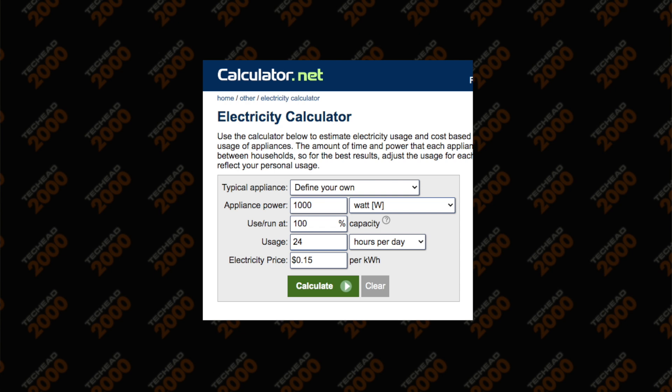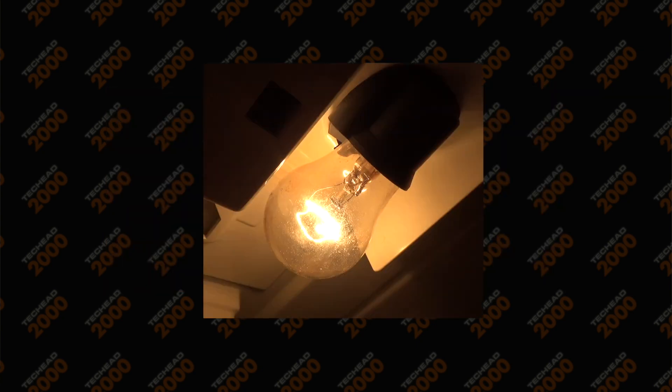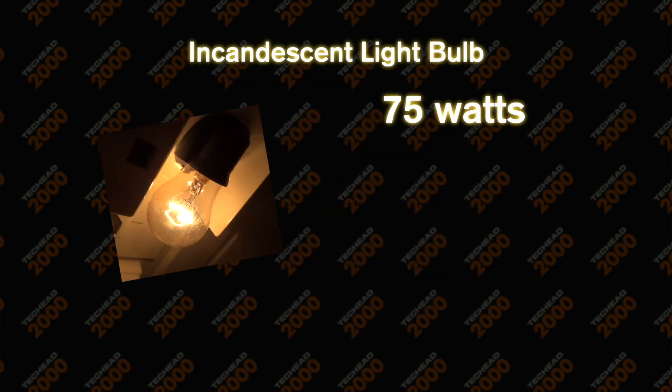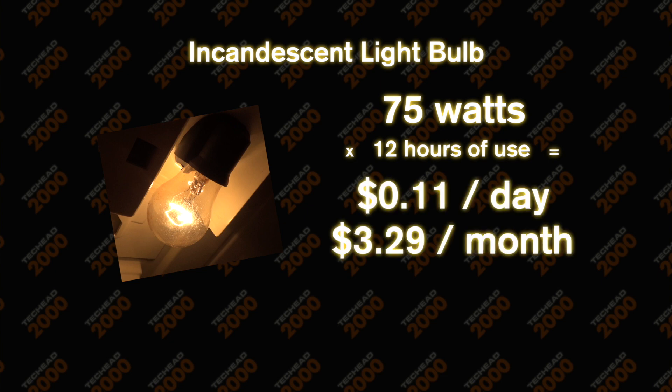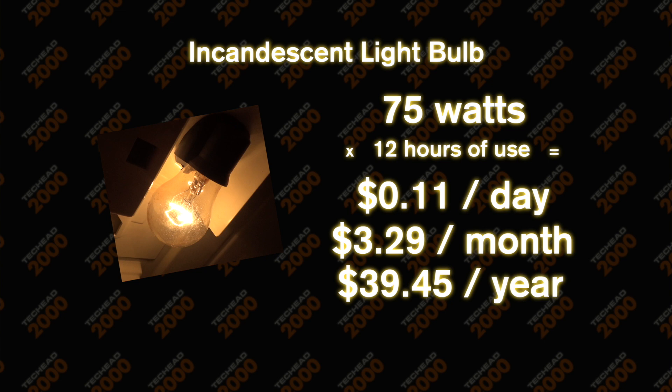Let's take a look at common devices in the home and how much power they use. I'm going to offer calculations based on rates in Tennessee, but you can use a power consumption calculator with your own rates — I'll put a link in the description. First, we gotta talk about light bulbs. Incandescent light bulbs are the more traditional version that use a little filament that heats up and glows. Using a 75 watt bulb on for 12 hours a day, it'll cost you around 11 cents a day, $3.29 a month, and $39.45 per year — for one light bulb. They're not energy efficient at all. That's why we don't use them anymore.